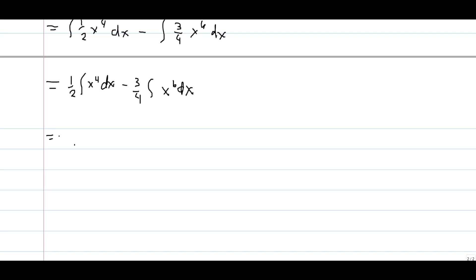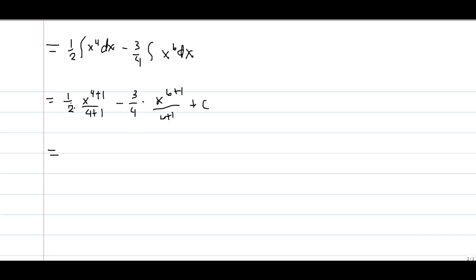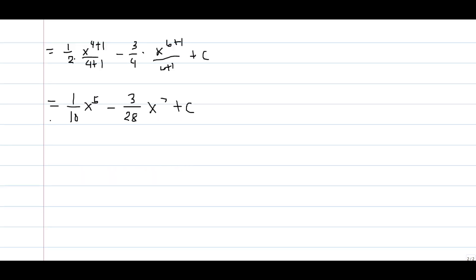We can now integrate each term. One-half times x to the power 4 plus 1 over 4 plus 1, minus 3 over 4 times x to the power 6 plus 1 over 6 plus 1, plus c. Finalizing: one-half times one-fifth gives 1 over 10 times x to the power 5, then minus 3 over 28 times x to the power 7 plus c. That is the final answer.